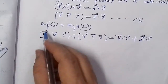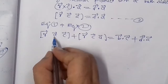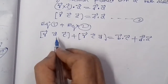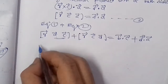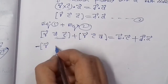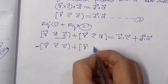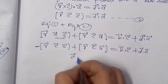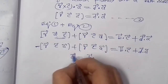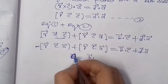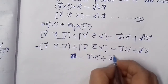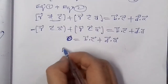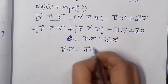हम जानते हैं कि scalar triple product में कोई दो elements आपस में interchange करते हैं तो sign change हो जाता है। तो [R⃗, C⃗, A⃗] को इस जैसा बनाने के लिए A⃗ को last पहुँचा देंगे और C⃗ बीच में है — दोनों को interchange करने पर minus आ जाता है। तो [R⃗, A⃗, C⃗] और −[R⃗, A⃗, C⃗] cancel हो जाएंगे, यानी 0। इस तरह R⃗ eliminate हो गया और A⃗, B⃗, C⃗, D⃗ के बीच relation आ गया — यही condition है: B⃗ · C⃗ + D⃗ · A⃗ = 0।